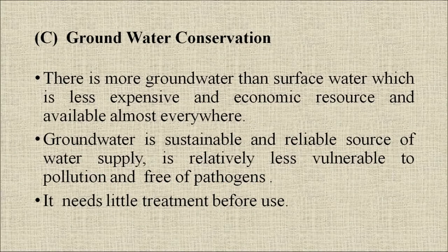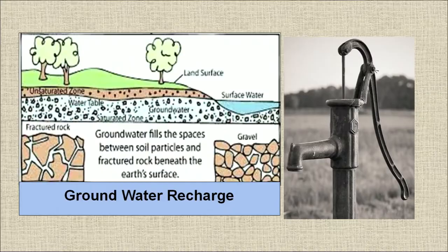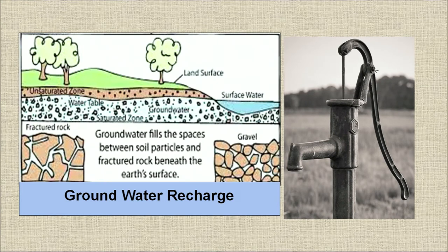Groundwater conservation: there is more groundwater than surface water; it is a less expensive and economic resource available almost everywhere. Groundwater is a sustainable and reliable source of water supply, relatively less vulnerable to pollution, free of pathogens, and needs little treatment before use. It can be recharged and used by installing hand pumps. There are no conveyance losses in underground-based water supplies, and groundwater has low vulnerability to drought, making it key to life in arid and semi-arid regions. Out of the total 4,000 billion cubic meters of precipitation in India, about 45 million hectare-meters percolate as groundwater flow.